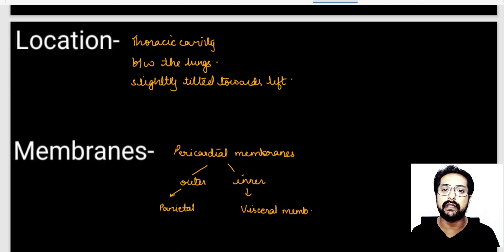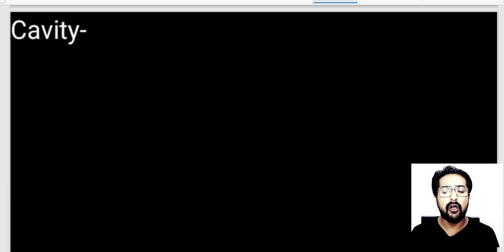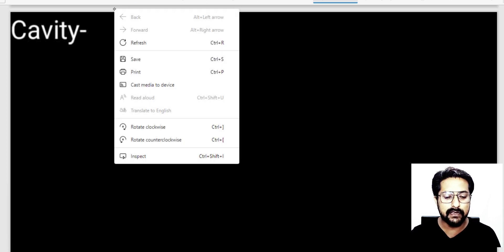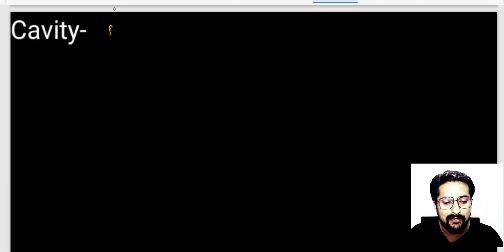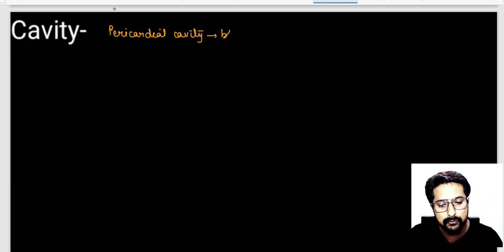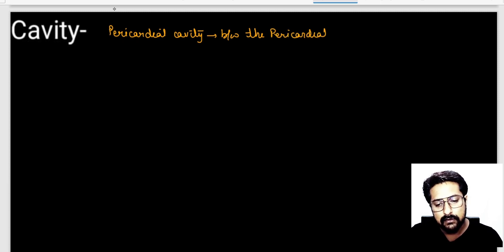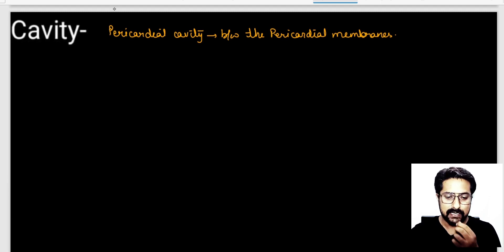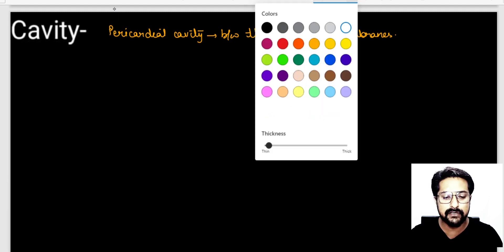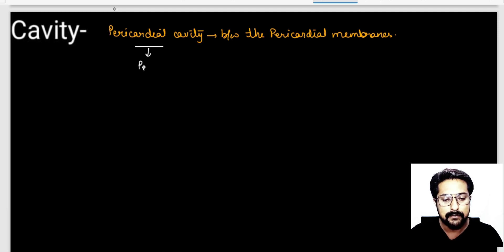In between these two membranes there occurs a space, which is known as the pericardial space or pericardial cavity. This cavity is present between the outer parietal and the inner visceral pericardial membranes. This pericardial cavity is filled with a fluid known as pericardial fluid.